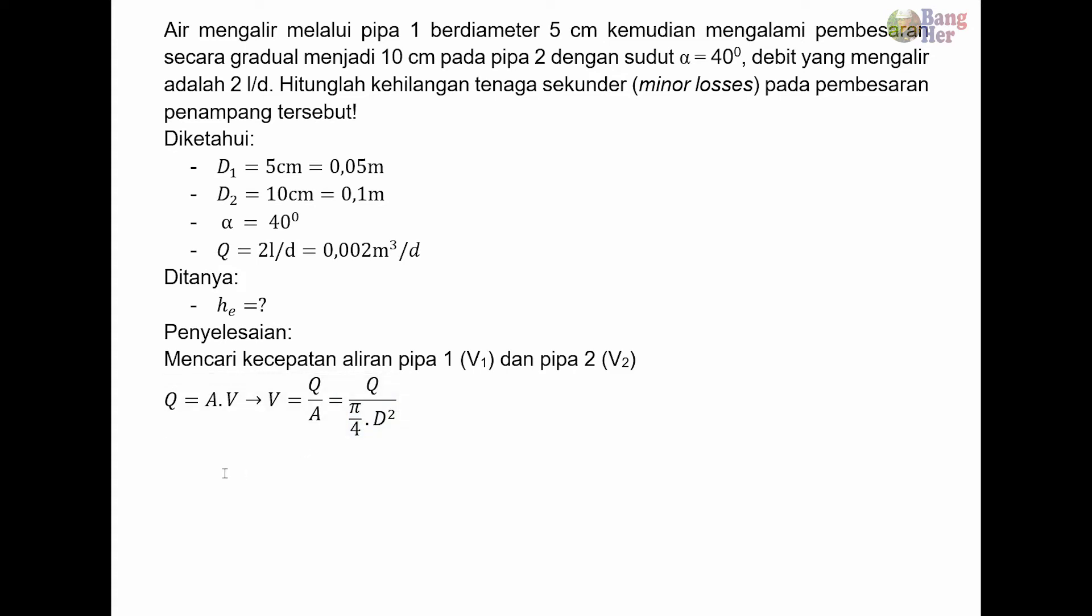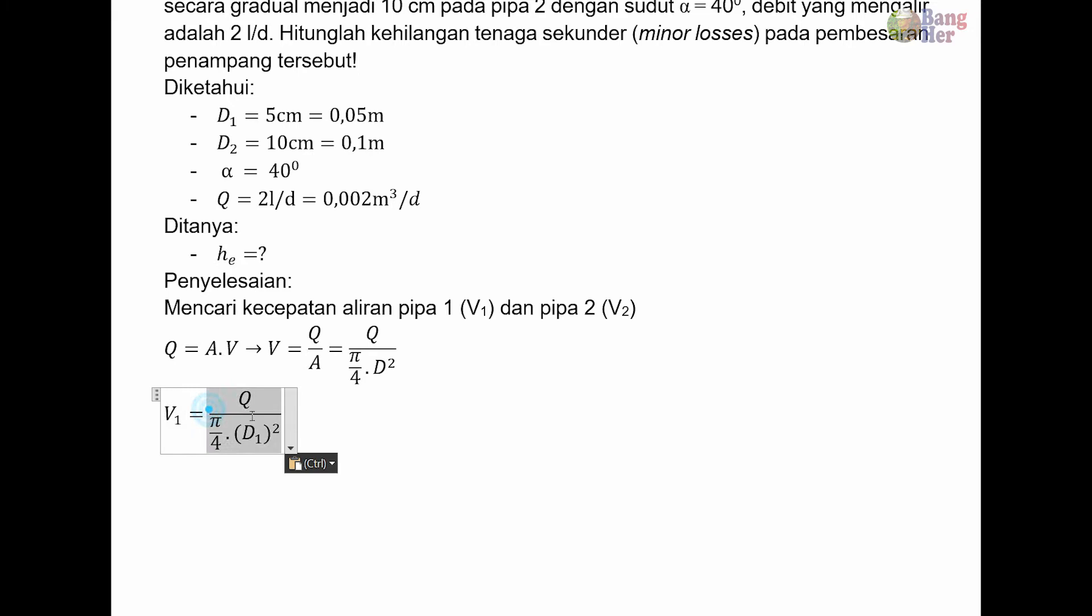Yang pertama kita mencari V1. V1 sama dengan Q per 1/4 pi D kuadrat. Jadi kita menggunakan persamaan ini tadi, karena ini V1, jadi dia D1. Input nilainya, Q diketahui 0,002 meter pangkat 3 per detik. D1-nya adalah 0,05 meter dikuadratkan. Ini semua kalau dihitung, diperoleh kecepatan aliran pada pipa 1 adalah 1,02 meter per detik.